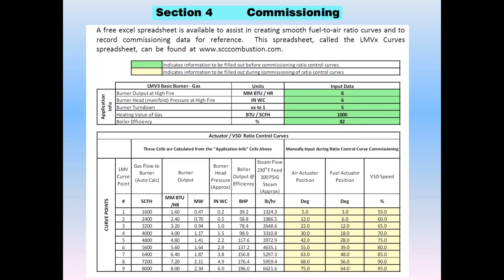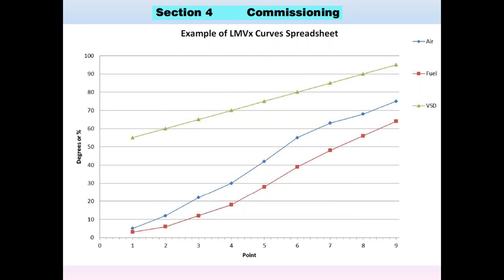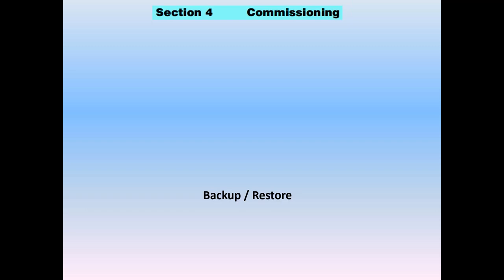There's a free Excel spreadsheet on the website that helps you put in fuel values such as clocking your meters, documenting your fuel, air, and VSD positions. It gives you an idea of burner head pressures to expect, resulting boiler horsepower, steam flow, output in megawatts or millions of BTUs, and cubic feet of gas if you clock your meter. It's a very convenient and nice documentation of your burner curve.